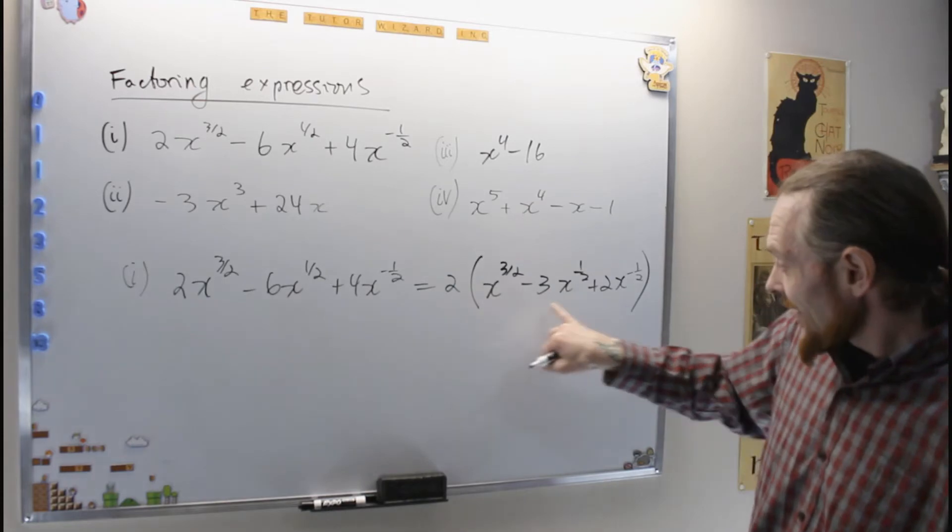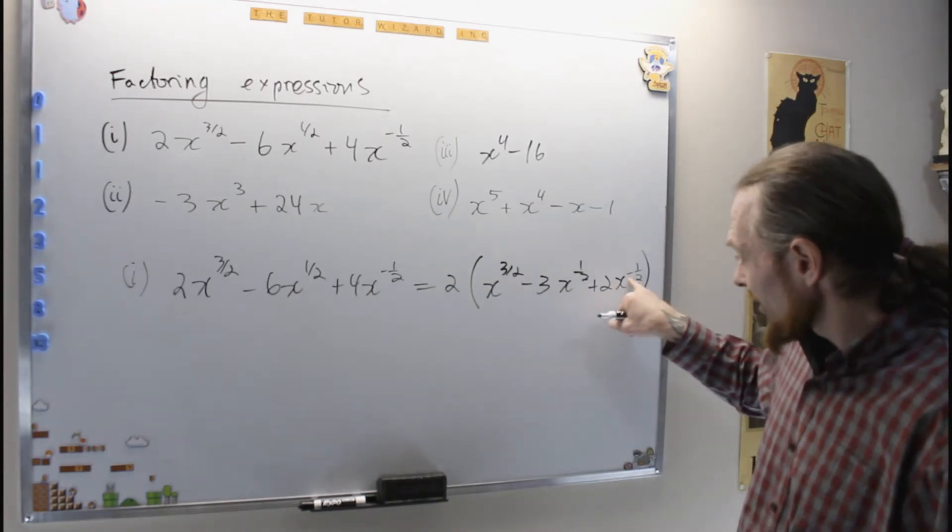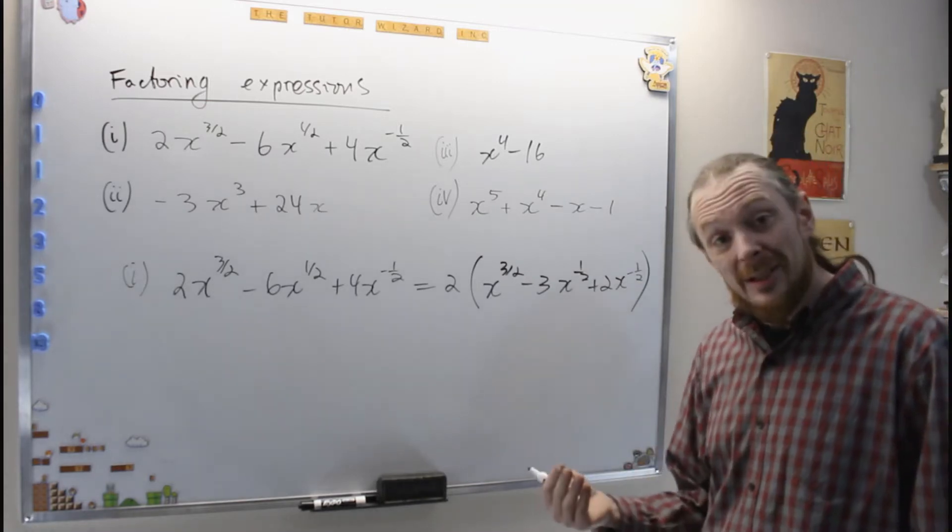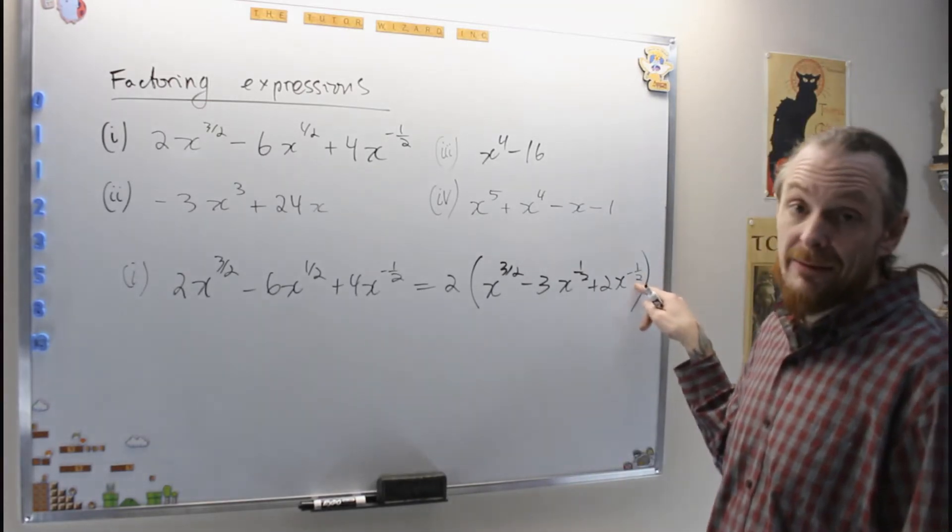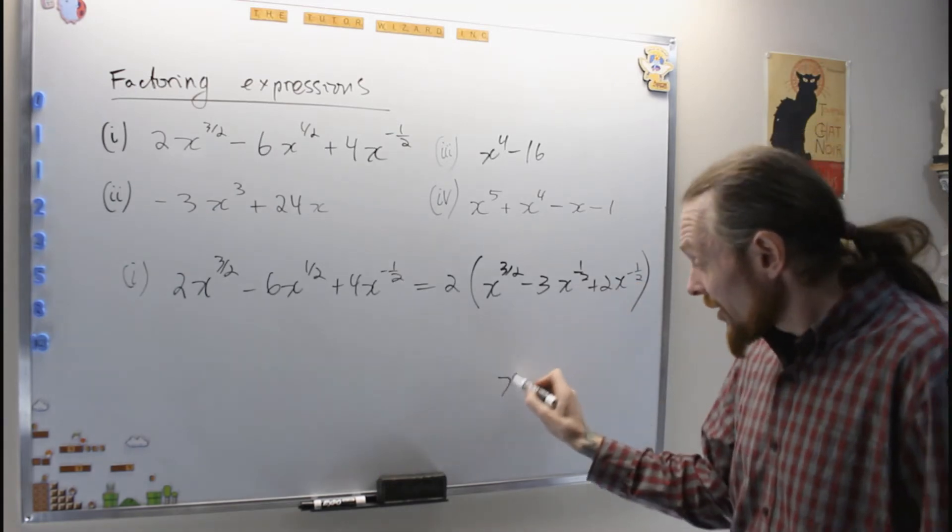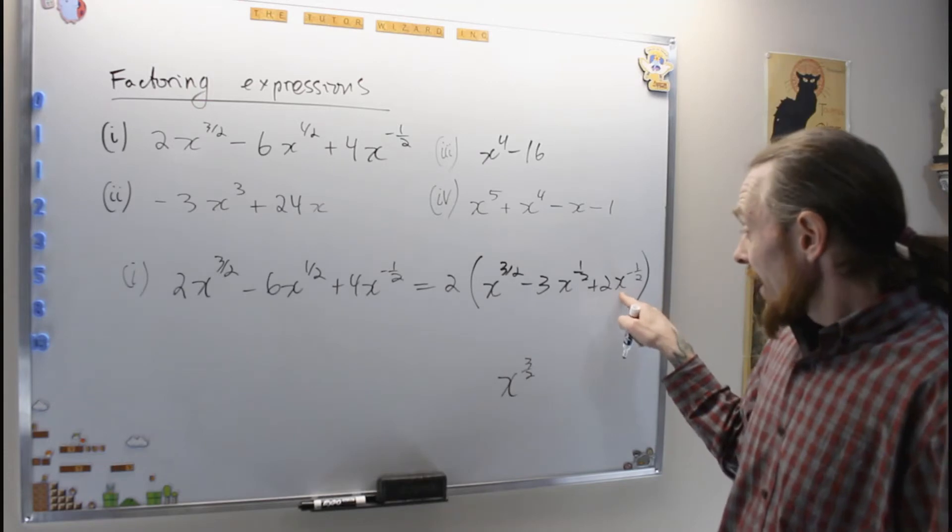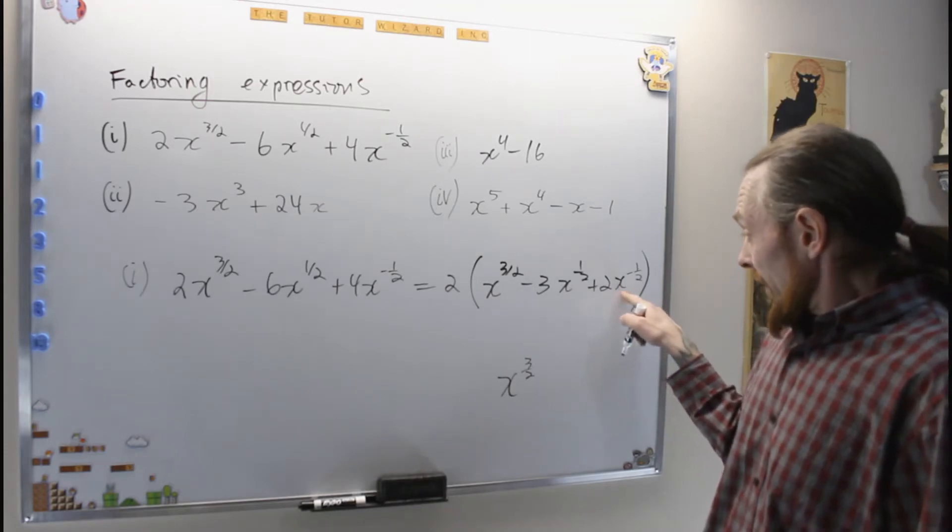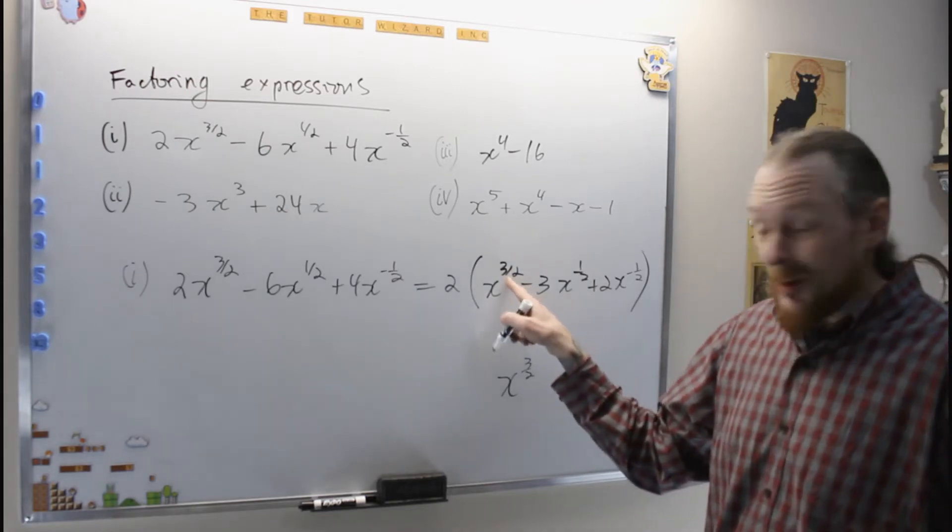So now what I see is I have x in each term, and this is the clever or the tricky part. We're going to pull out the negative. We always pull out the lowest exponent of each power. So in this case, it's negative 1 half. But what's going to happen is when we do for 3 over 2, what we're actually doing is we're taking this out of each term.